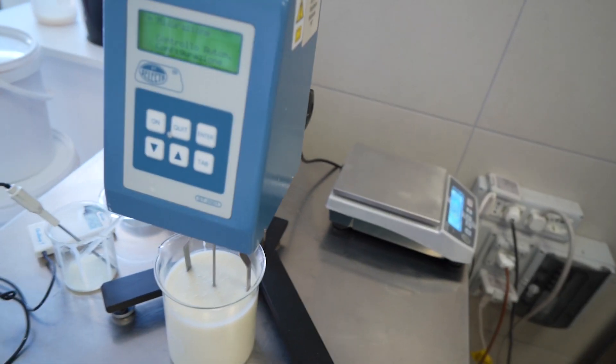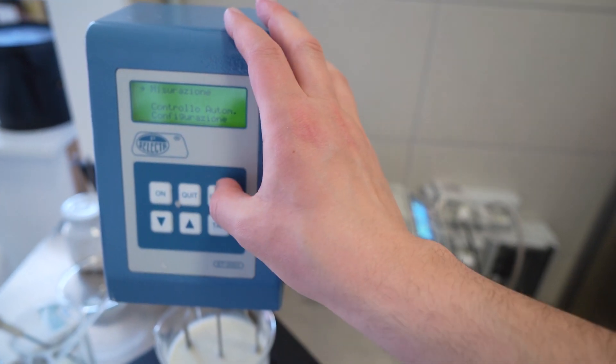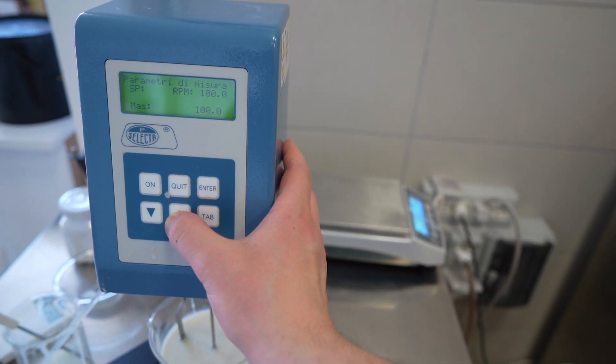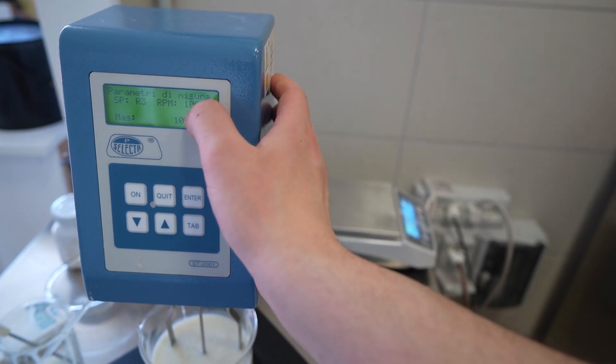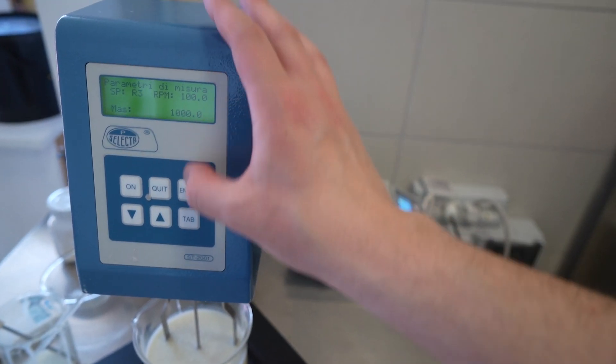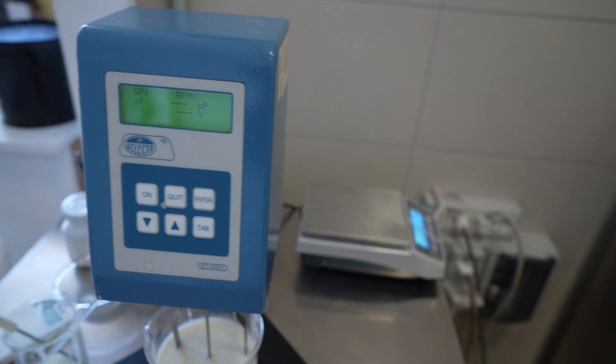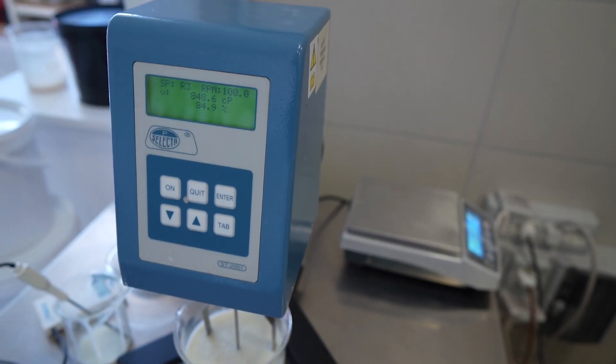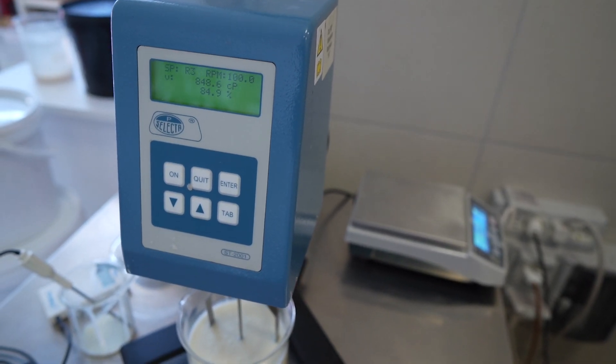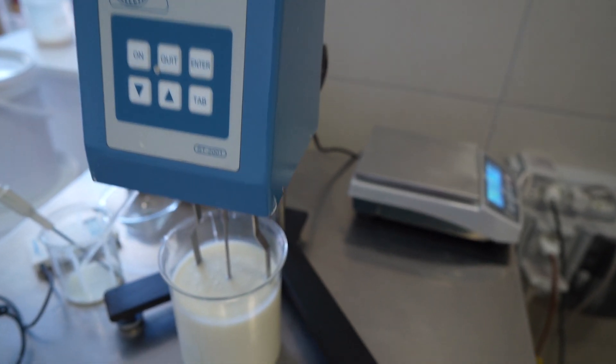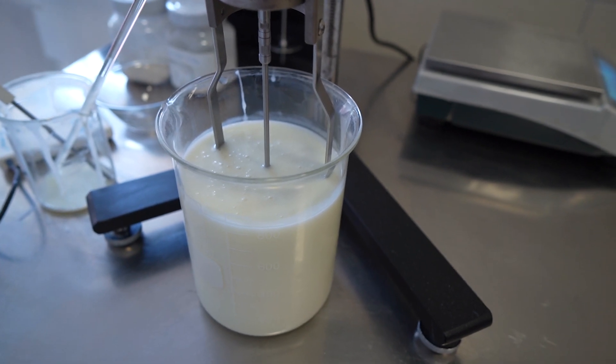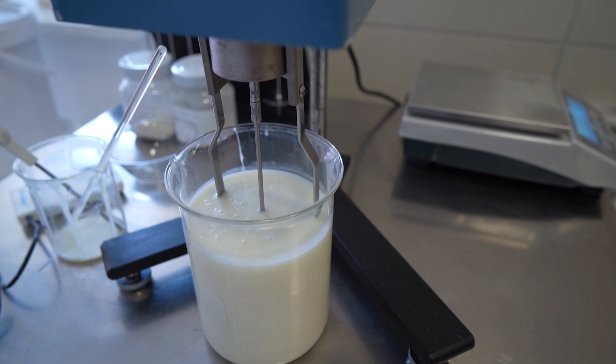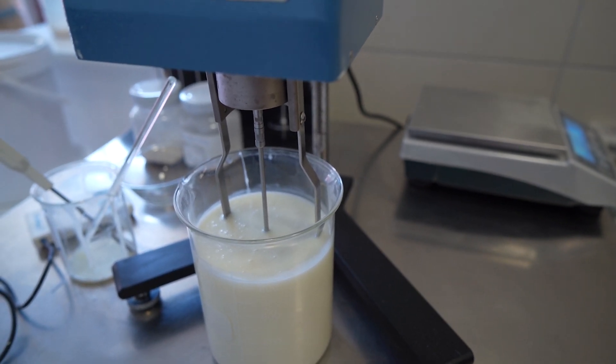We go to the machine and start the measurement. We select the right spindle, this is number three, and the rotations per minute. Then we start. Now we have to wait for a certain number of rotations before we make the reading, because we want to reach a stationary movement and avoid any turbulence, which can change the viscosity reading.